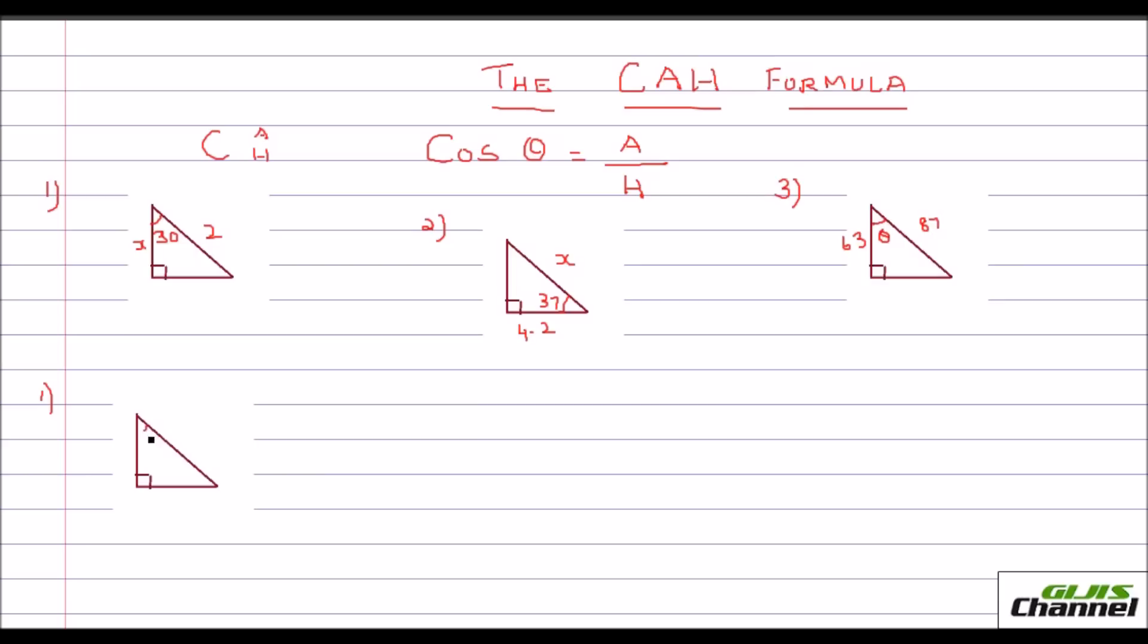So they have given you this theta, that is 30. They have given you the angle as 30. And this side, they ask you to find out. So that would be x and here this hypotenuse side is given.